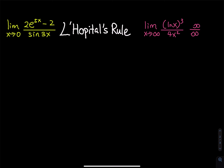I am going to evaluate 5 limits using L'Hôpital's rule. We use L'Hôpital's rule only when the limit has 0 over 0 or infinity over infinity. These two are two of the seven indeterminate forms. If we have 0 over 0 or infinity over infinity, we use L'Hôpital's rule. Otherwise, we do not use L'Hôpital's rule.